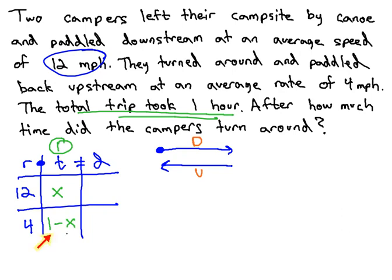Notice, when we take total minus x and add it to just x, the x's would subtract out to 0, and we're given the total time of one hour.